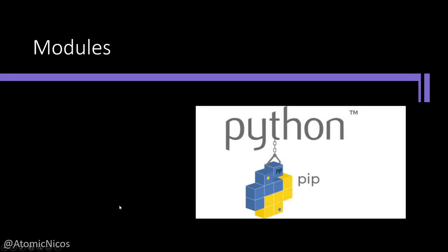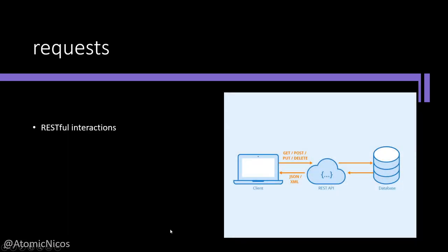We're going to be using some modules for this — three Python modules specifically. We'll be going over the requests module, BeautifulSoup4, and pandas. Requests is a module that allows you to do RESTful interactions — everything that is GET, POST, PUT, DELETE to an API — and retrieve some form of JSON or XML.